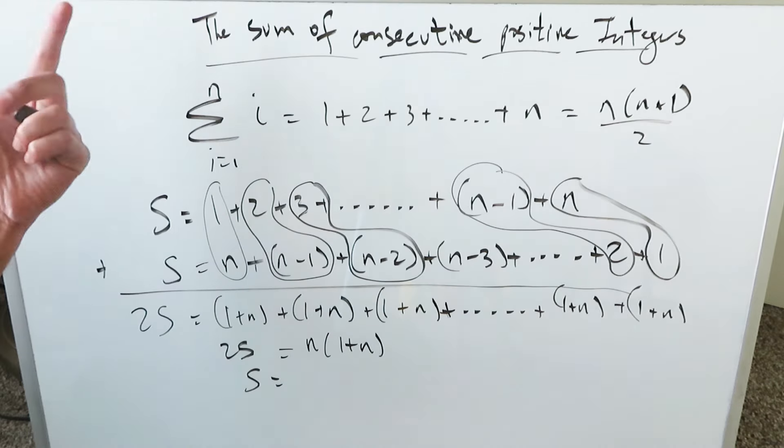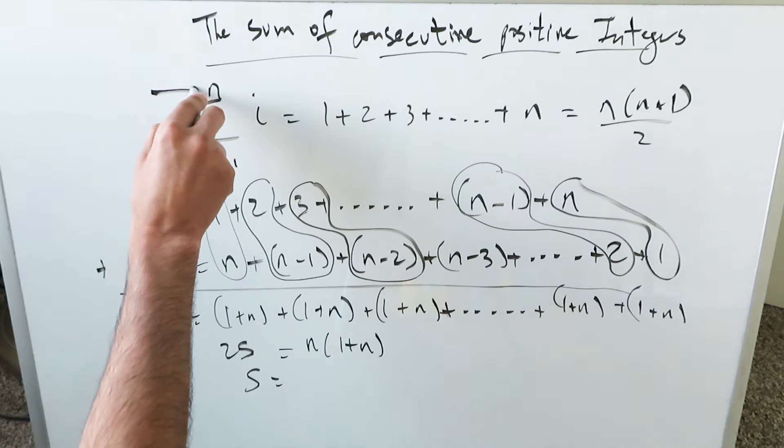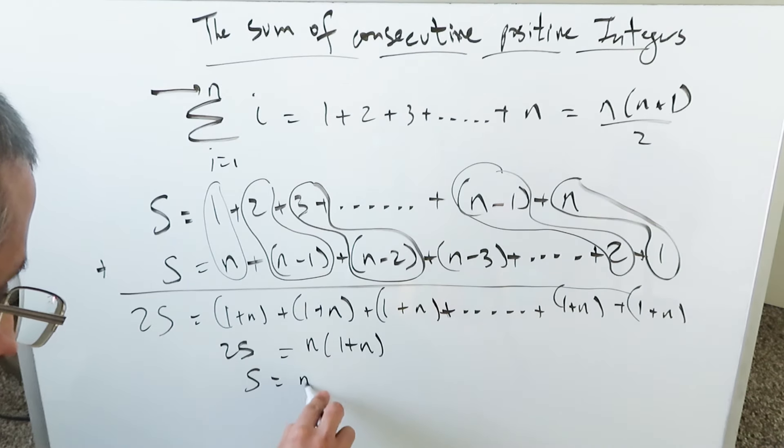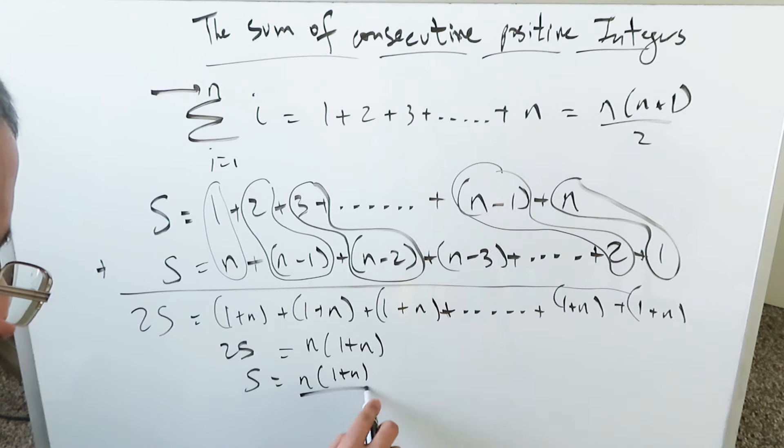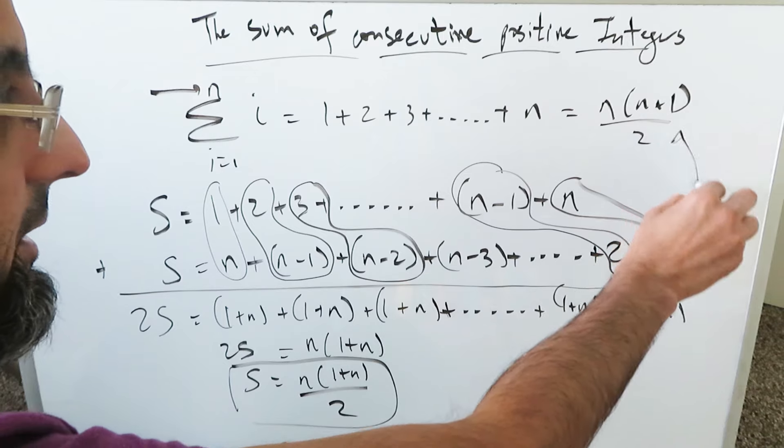Therefore, the sum, which is what we're looking at here, the sum of consecutive positive integers up to a given value n, is equal to n times 1 plus n, or n plus 1, it doesn't matter, divided by 2. And your formula is derived, which you see right over here.